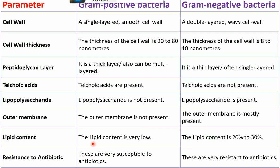Hello everyone. In this lecture today I'm going to talk to you about the differences between gram-positive bacteria and gram-negative bacteria based on these parameters. The first difference is in the cell wall. The cell wall of gram-positive bacteria is a single layered, smooth cell wall, whereas the cell wall of gram-negative bacteria is a double layered and wavy cell wall.